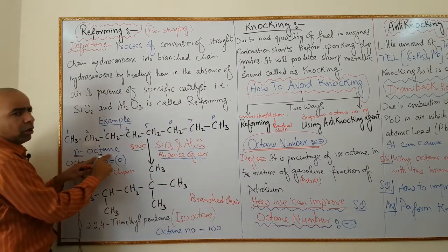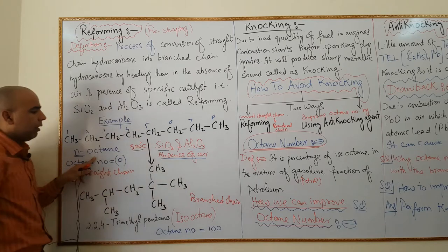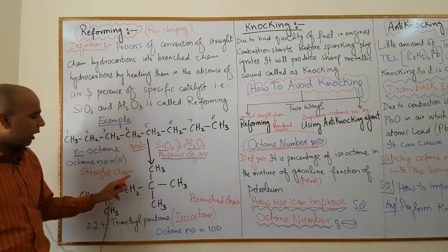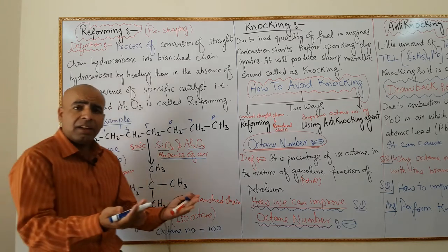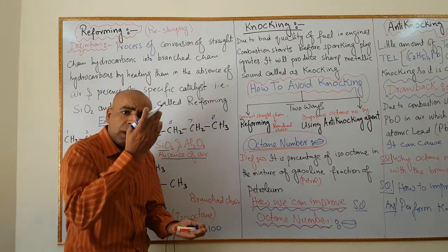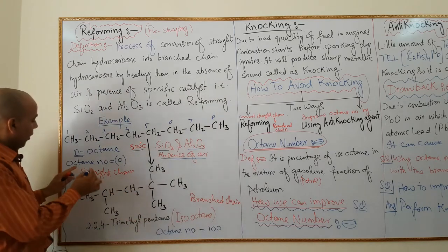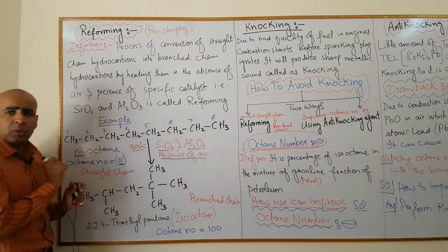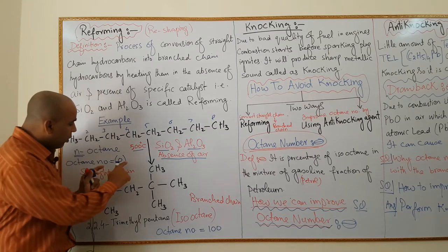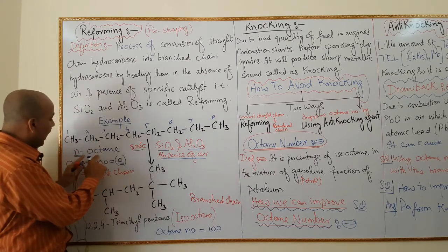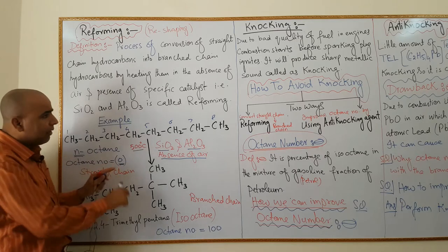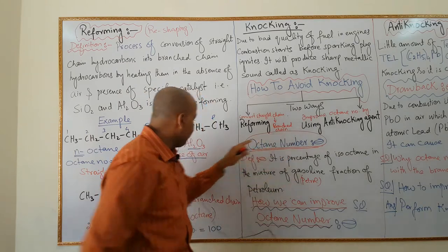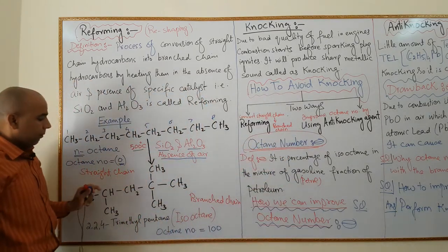This is normal octane — a straight chain hydrocarbon. We want to convert this straight chain hydrocarbon into a branched chain hydrocarbon. The reason is that straight chain n-octane has an octane number of zero. We will discuss what octane number means shortly.